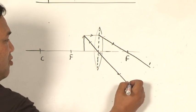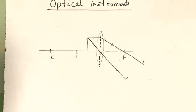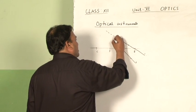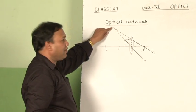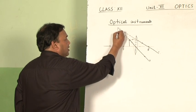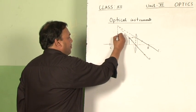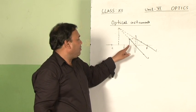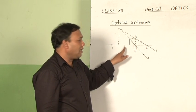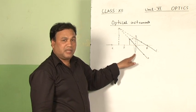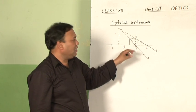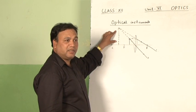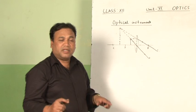One ray of light starting from the object parallel to the principal axis, after refraction, passes through the focus on the other side. Another ray of light passing through the center of the lens goes undeviated. These two refracted light rays are diverging, so an image cannot be obtained on that side. But when these two rays are extended backwards, they appear to come from a point — at this point, a virtual image is formed.